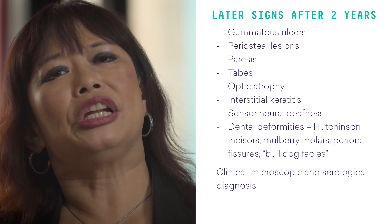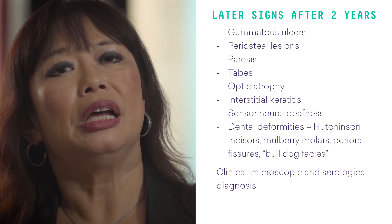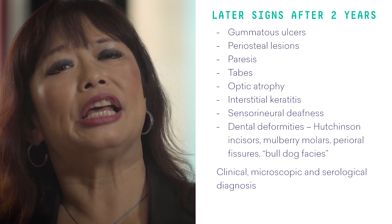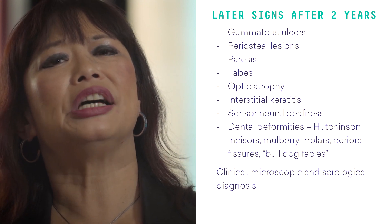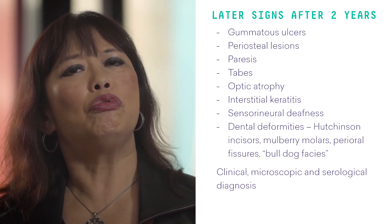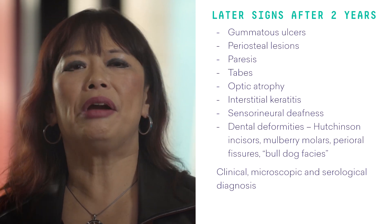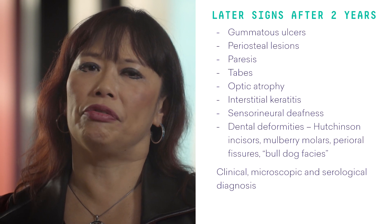The later signs of congenital syphilis include gummatous ulcers, periosteal lesions, paresis, tabes, optic atrophy, interstitial keratitis, sensorineural deafness, and very characteristic dental deformities including Hutchinson's incisors, mulberry molars, perioral fissures, and a bulldog facies. There are clinical, microscopic, and serological diagnoses involved. Untreated syphilis in pregnancy will result in stillbirth and neonatal death.